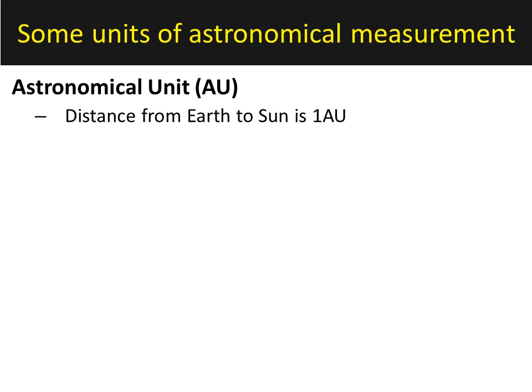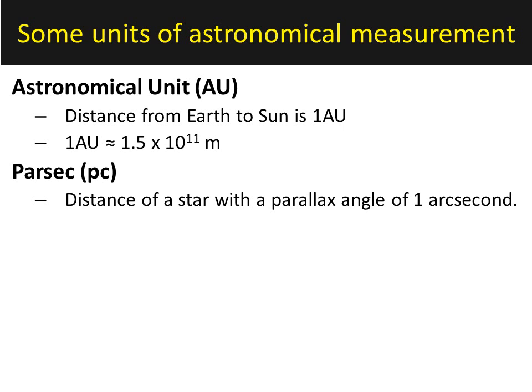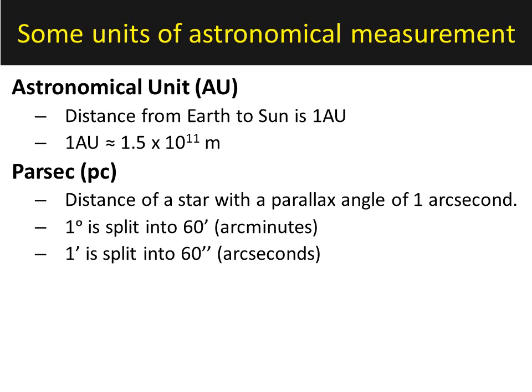Some units we often use for parallax: first is the astronomical unit, the distance from the Earth to the sun — the average, as our orbit is not perfectly circular. And the parsec, which is a new unit you may not have come across yet, but it is used often in parallax. It was defined because of parallax, and it is the distance between us and a star where the parallax angle is one arc second. An arc second is one three-thousand-six-hundredth of a degree — each degree is split into sixty arc minutes, and each arc minute is then split into sixty arc seconds. So it is a way of further dividing a single degree.